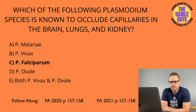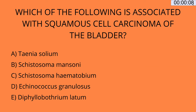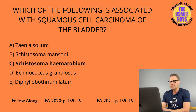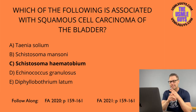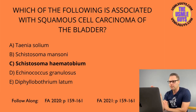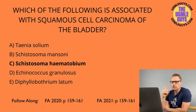Let's do one more question — hit that pause button and come back when you have the right answer. The correct answer here is C, Schistosoma haematobium. Worms are important, but you'll get far more questions from bacteriology and virology. Let me give you a quick review of the highest-yield facts in a Q&A format. Question one: perianal itching — which worm is involved?